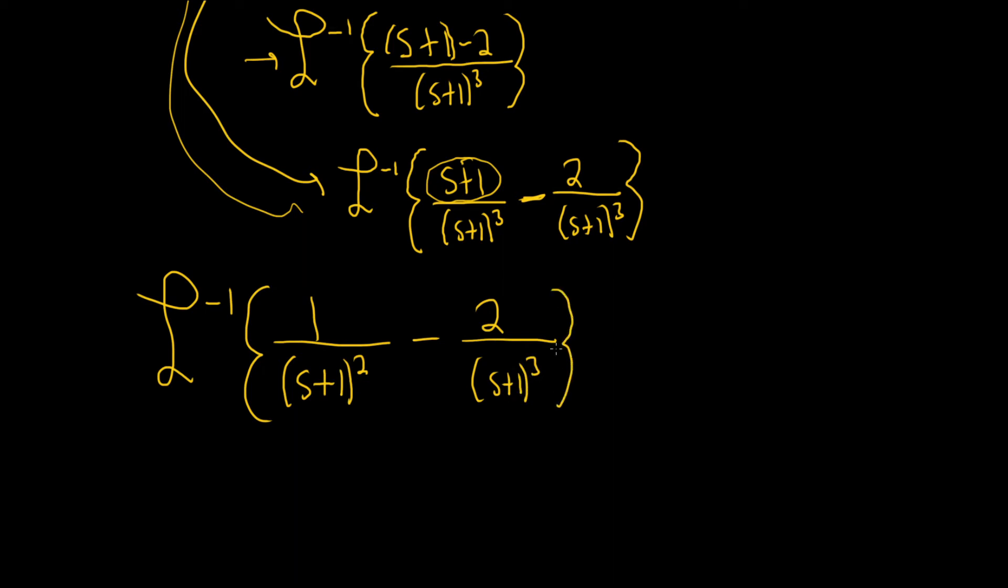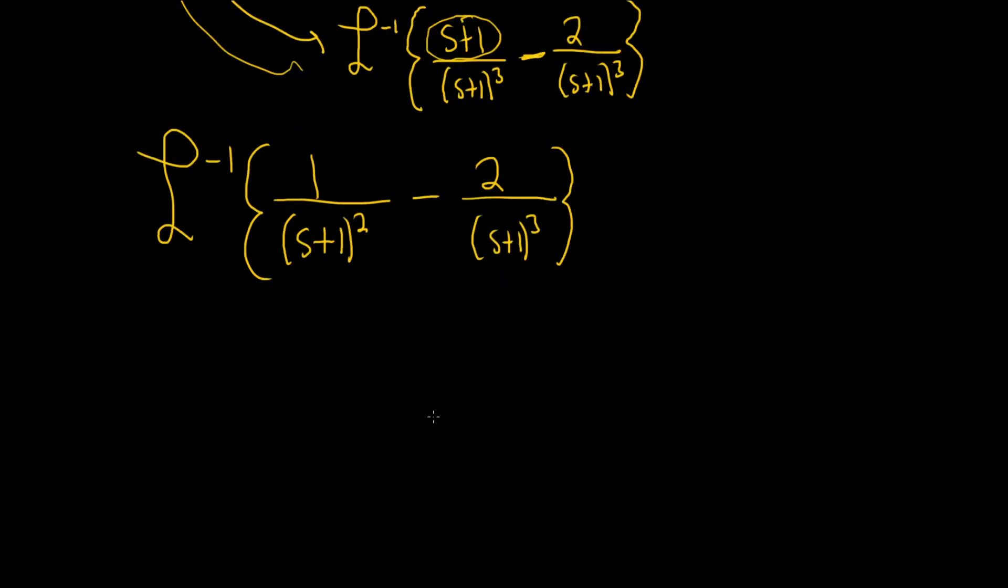And so now we've gotten rid of the s up top, which is good, because now we can do shifting. So to do the shifting, we'll break it up into two inverse Laplace transforms. This is the inverse Laplace of 1 over s plus 1 squared minus 2 inverse Laplace 1 over s plus 1 cubed.